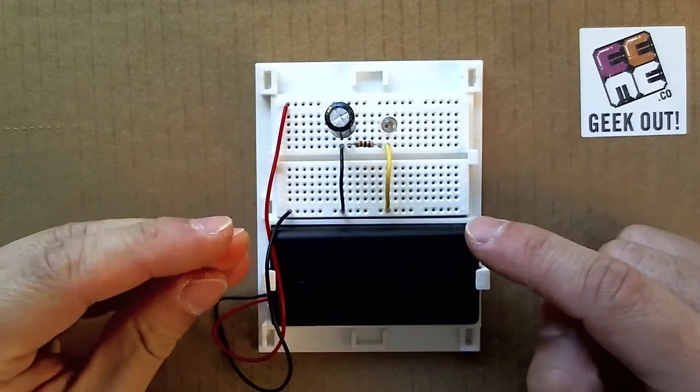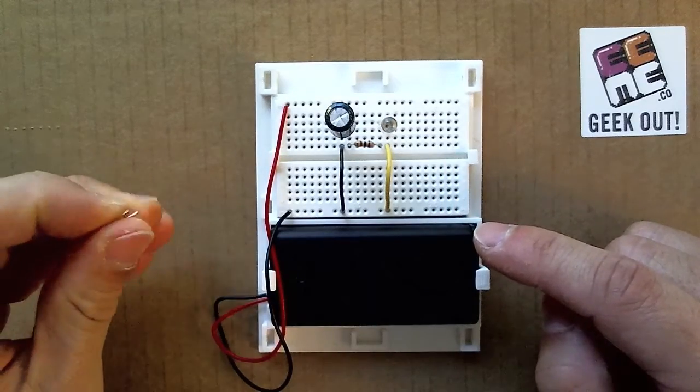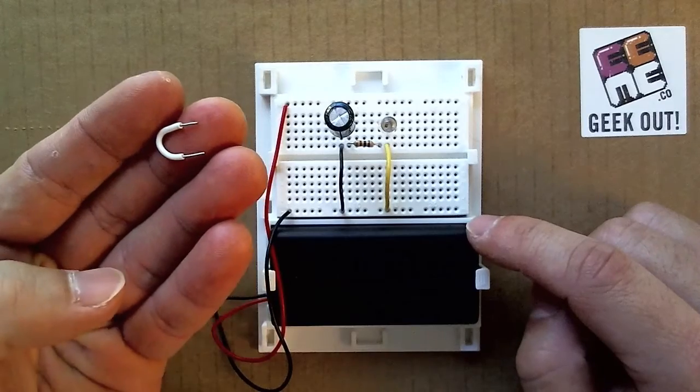First, we start with this partially built open LED circuit on this breadboard. Once we connect this white wire onto the breadboard, the circuit will close.